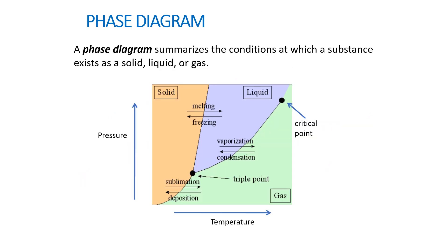Now let's convert this basic knowledge into a phase diagram, which summarizes the conditions under which a substance exists as a solid, liquid, or gas. In the phase diagram, we plot pressure against temperature. We have the solid region, the liquid region, and the gas region, all separated by their own phase boundaries.